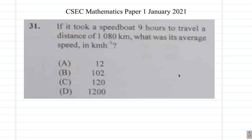Question 31. If it took a speedboat 9 hours to travel a distance of 1,080 km, what was the average speed in km per hour?